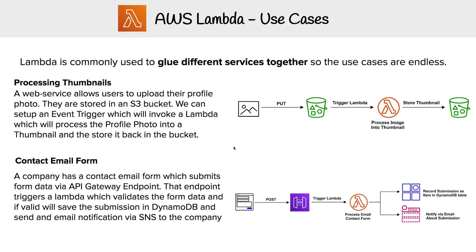Another use case would be a contact email form. On ExamPro, when you fill in the contact email form, it sends that form data to an API Gateway endpoint, which then triggers a Lambda function. That Lambda function evaluates whether the form data is valid or not. If it's not valid, it will say you need to make these corrections.